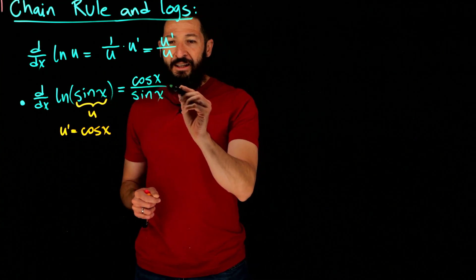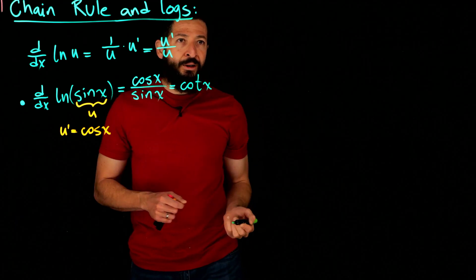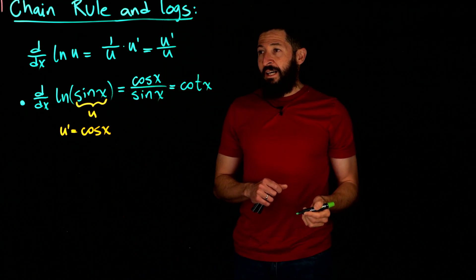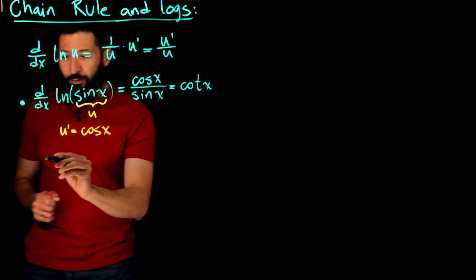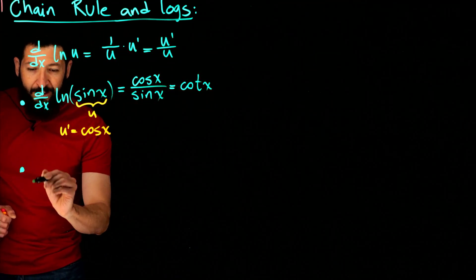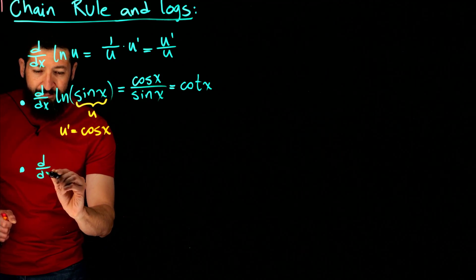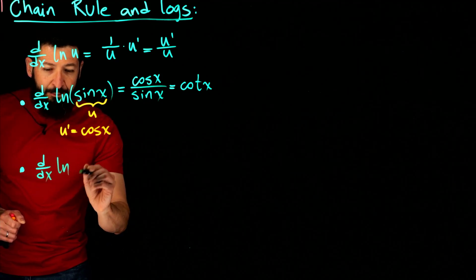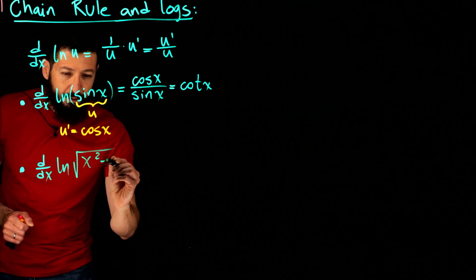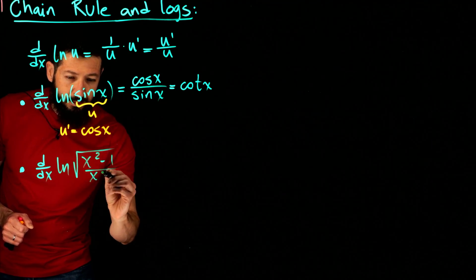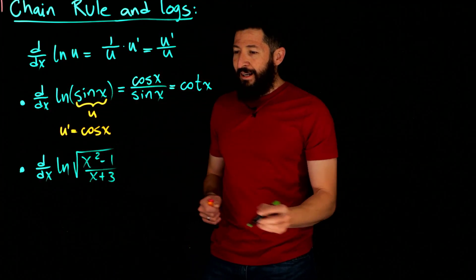That result, cosine over sine, is actually the cotangent of x if you want to write it that way. That is one nice thing about logarithms — you can take derivatives rather easily. Of course, you could encounter something more complex.